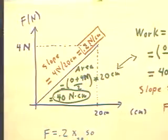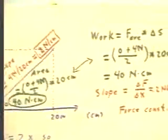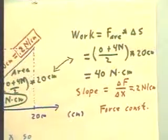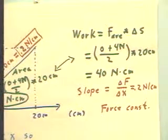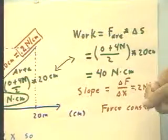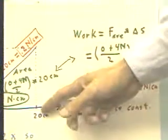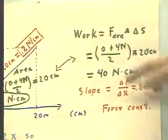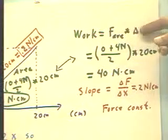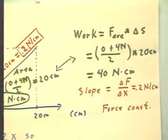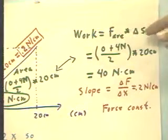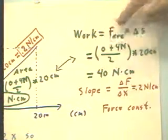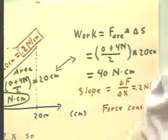Now we might ask how much work is done in stretching the rubber band? In the region corresponding to this graph, the work is going to be the average force times the displacement. How do we get the average force? We average the force at one end, which is 0, and the force at the other end. That is, when it's not stretched out, the force is 0.